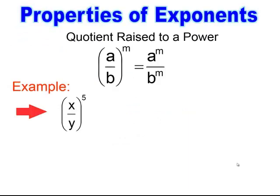Similar to a quantity raised to a power, when you have a quotient raised to a power, that power on the outside needs to go to everything inside. So you end up with something like x over y all raised to the 5th power. To simplify, I take that power and give it to everything inside, and I end up getting x to the 5th over y to the 5th.